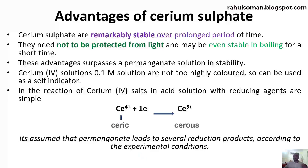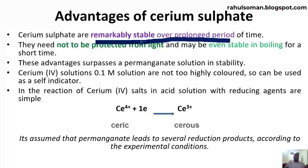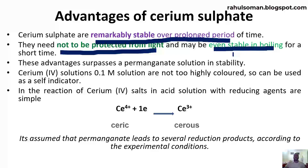Ceric sulfate can be used only in acid solution — best in 0.5 molar or higher concentration of acids, especially sulfuric acid. If used in neutral solutions, cerium sulfate will convert into cerium hydroxide and undergo precipitation. So we do not use ceric sulfate in neutral or basic conditions. Cerium(IV) sulfate solutions are remarkably stable over a long period of time, need not be protected from light, and are even stable after boiling. These advantages surpass permanganate solution in terms of stability.